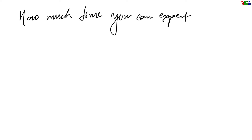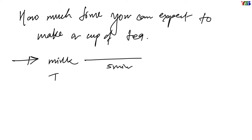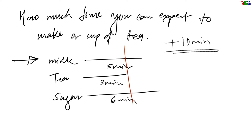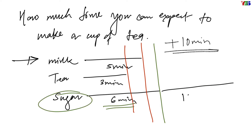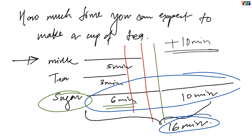So how much time can you expect to get a cup of tea ready? From a particular time, all 3 activities will start. After 3 minutes, you will have tea, but you can't start cooking since you don't have milk and sugar yet. After 5 minutes, you will have milk also, but you still have to wait for the sugar, which needs 1 more minute. After 6 minutes from the beginning, you can start cooking since you have all 3 materials: milk, tea, and sugar. Cooking takes 10 minutes, so from this analysis, it is clear that you will need at least 16 minutes to complete this project.